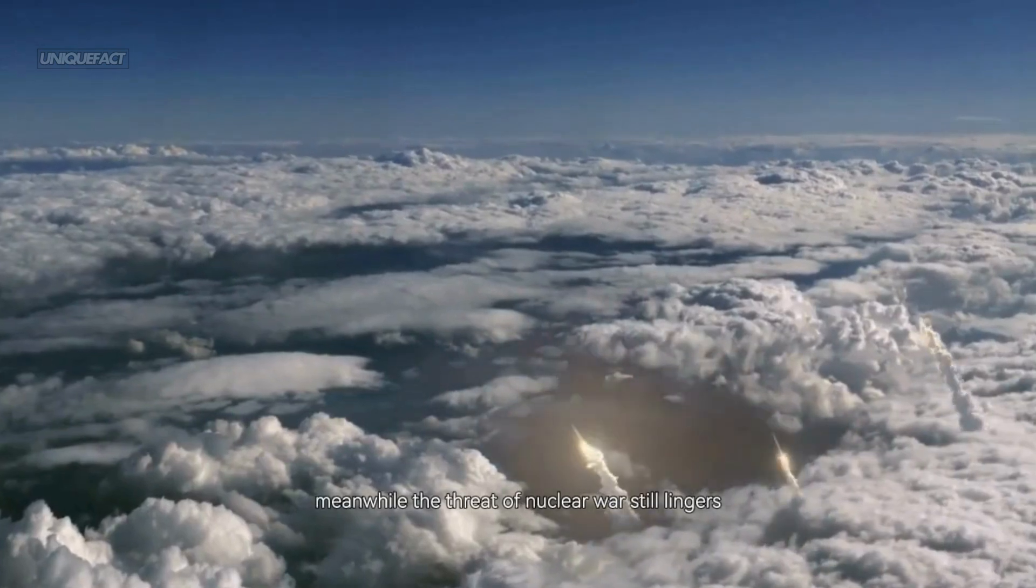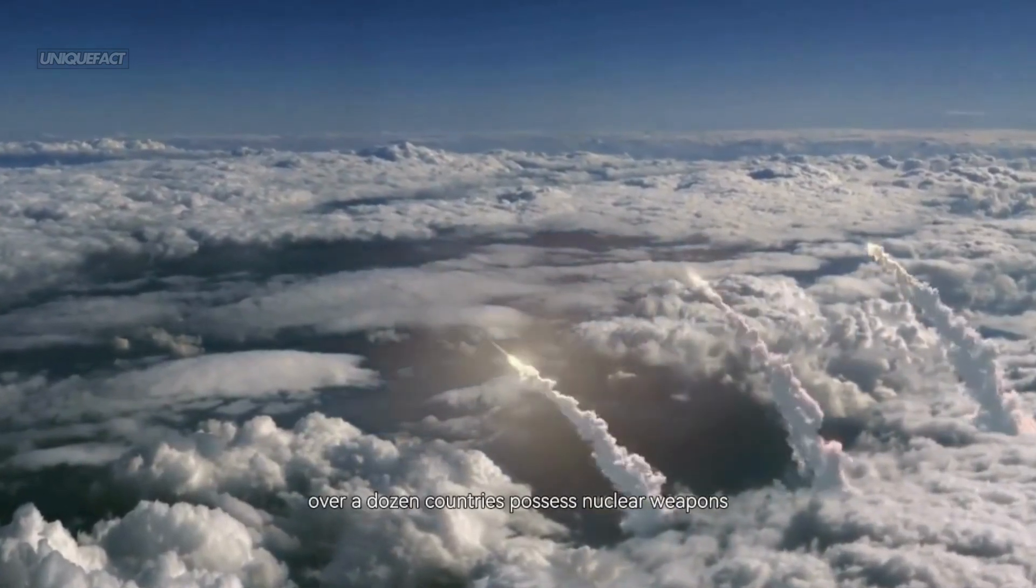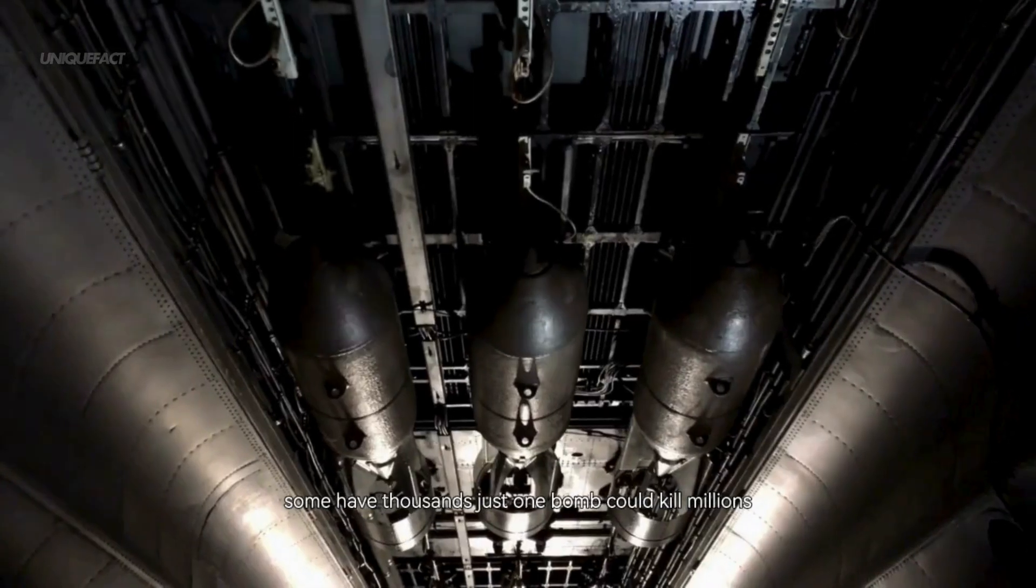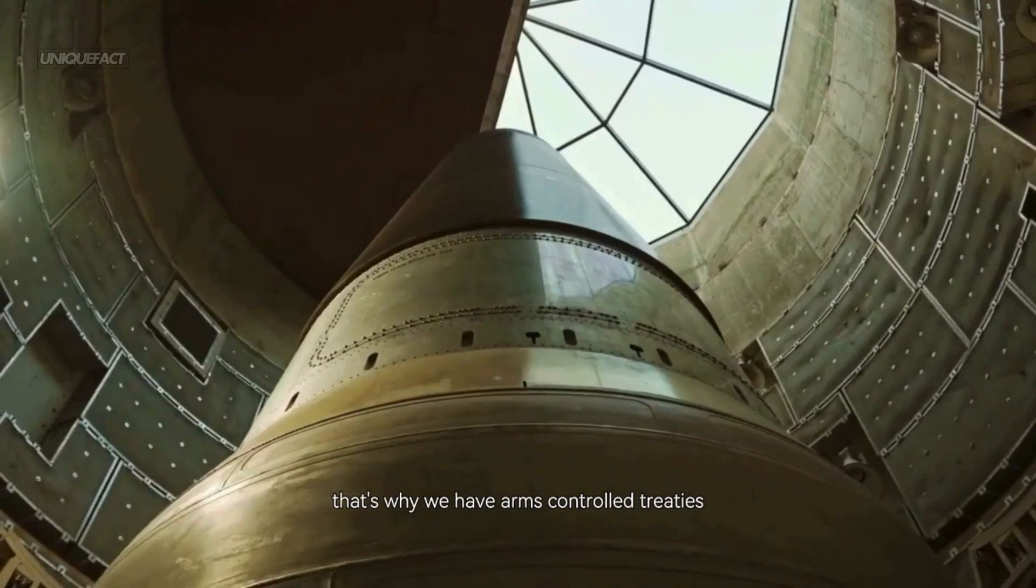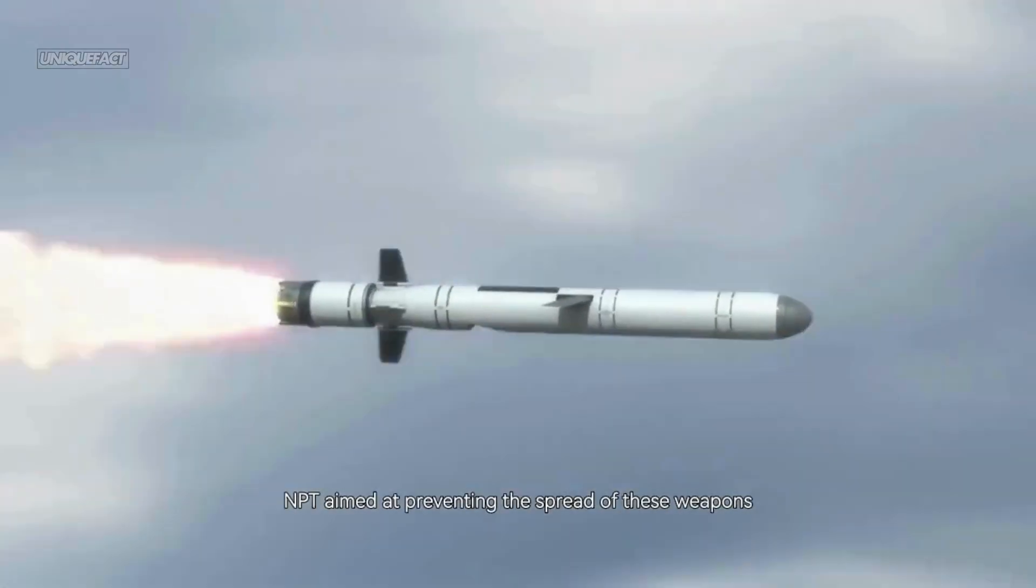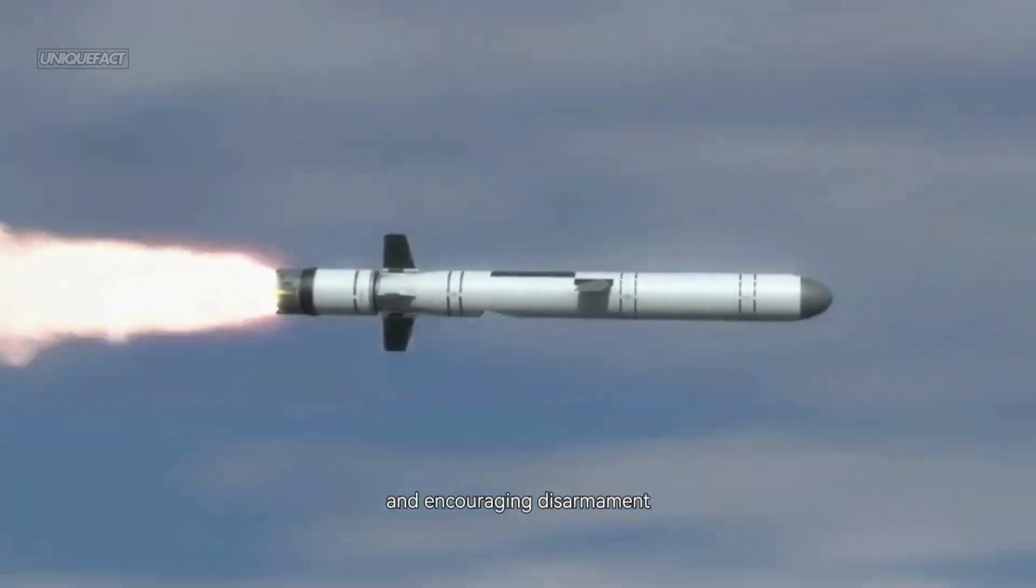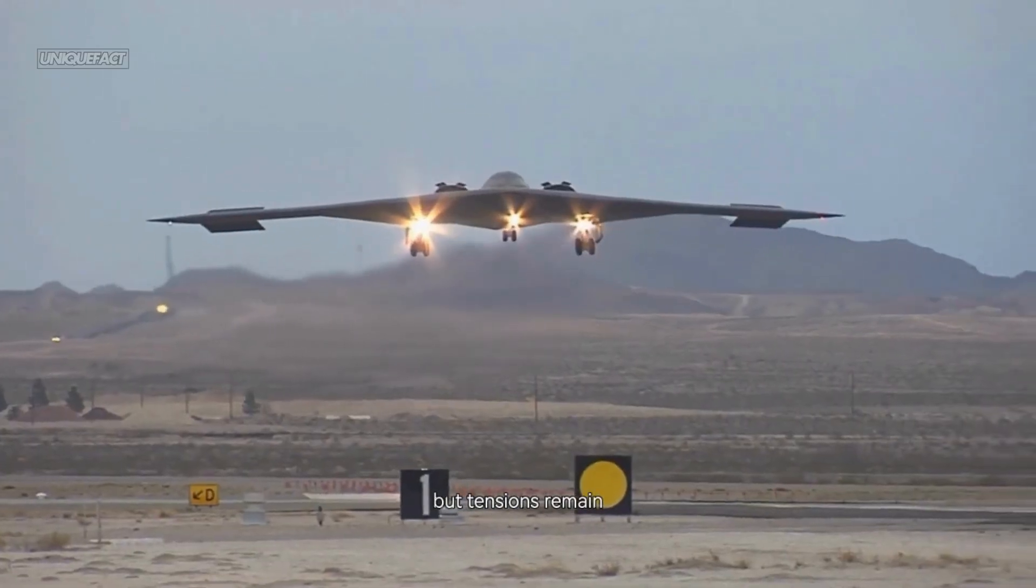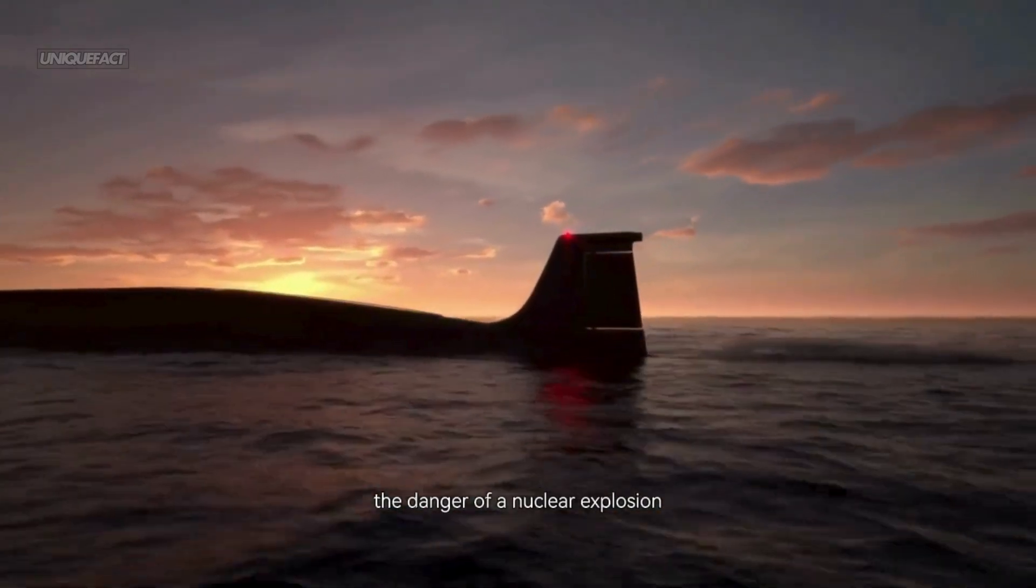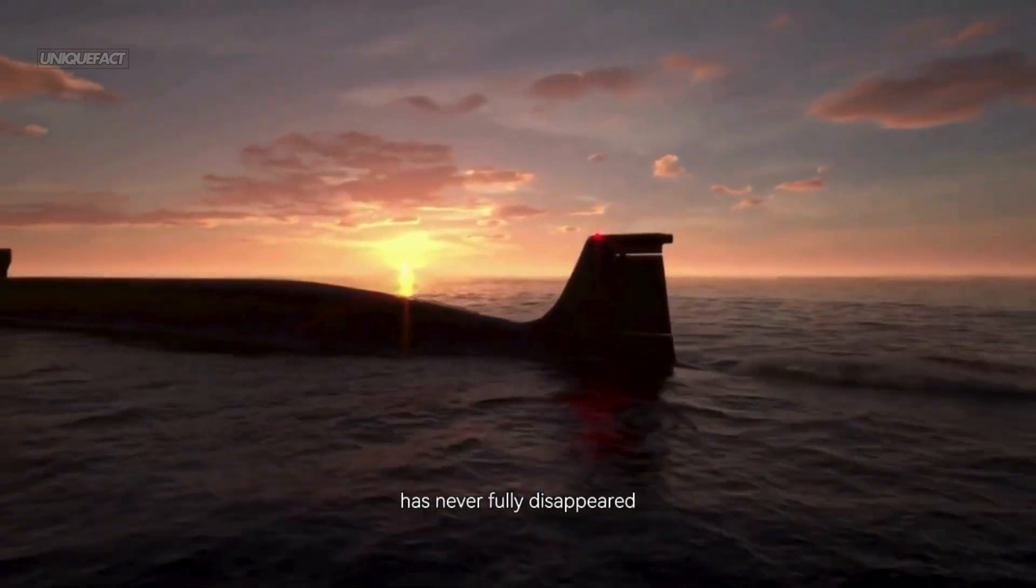Meanwhile, the threat of nuclear war still lingers. Over a dozen countries possess nuclear weapons, some have thousands. Just one bomb could kill millions and trigger a global crisis. That's why we have arms control treaties like the Nuclear Non-Proliferation Treaty (NPT) aimed at preventing the spread of these weapons and encouraging disarmament. But tensions remain. From rogue states to political brinkmanship, the danger of a nuclear explosion, accidental or intentional, has never fully disappeared.